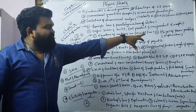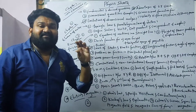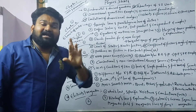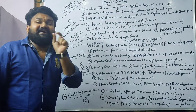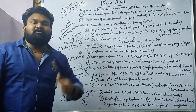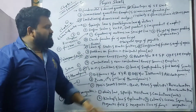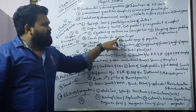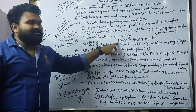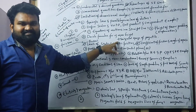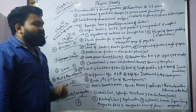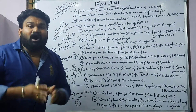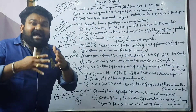Next is the height of a tower problem — the height of a tower formula with a clear explanation. Then derive a formula for maximum height and horizontal range of a projectile.